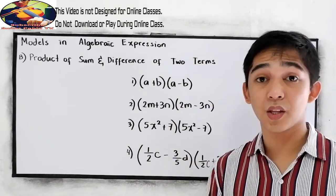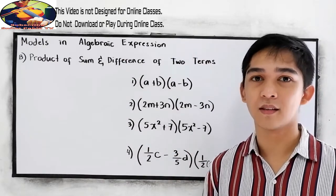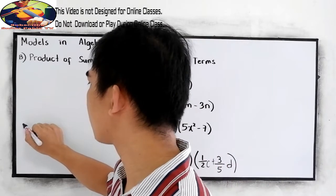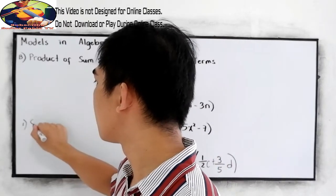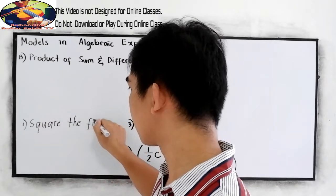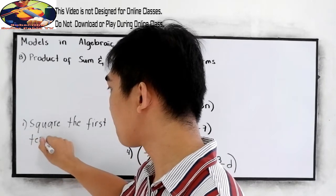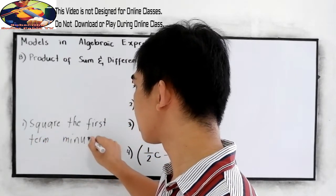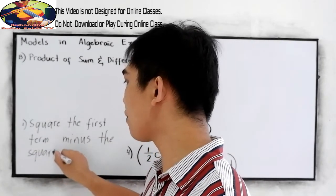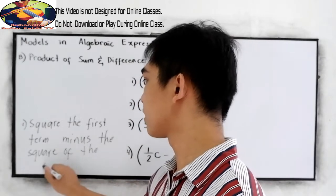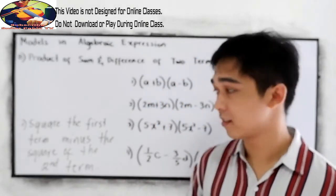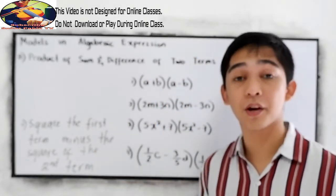Now, since this is a model we can solve this mentally. So to solve mentally, let's just square the first term minus the square of the second term. This will be our shortcut. Square the first term minus the square of the second term.